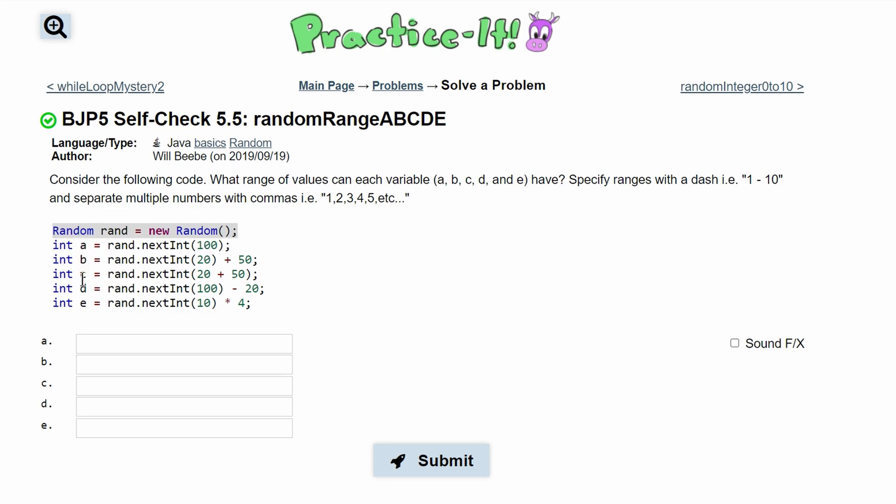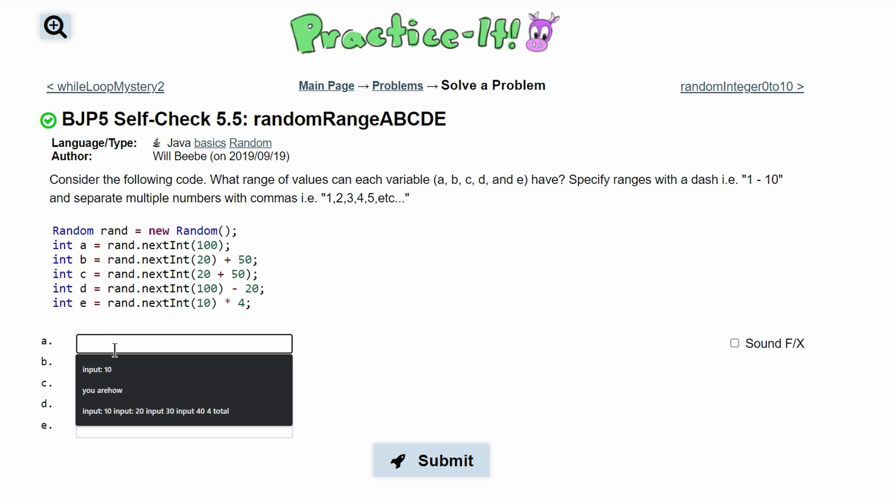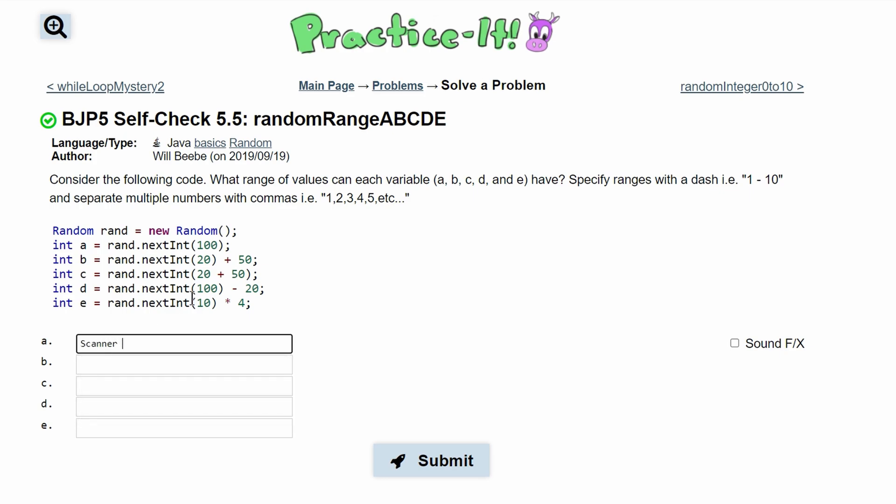So this is declaring the line. This is similar to a scanner where we would have scanner and then some name like scan, and we set this equal to new scanner with parentheses and a semicolon. So very similar to that, but now we're looking at random numbers. So this makes a random number.